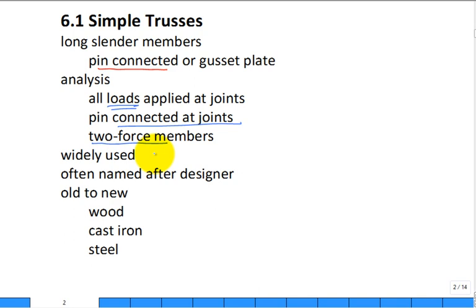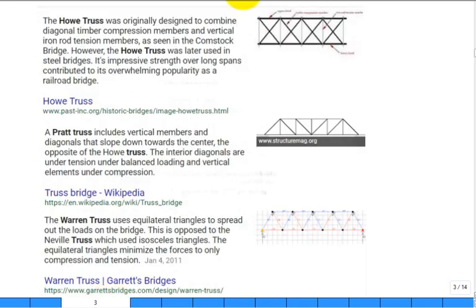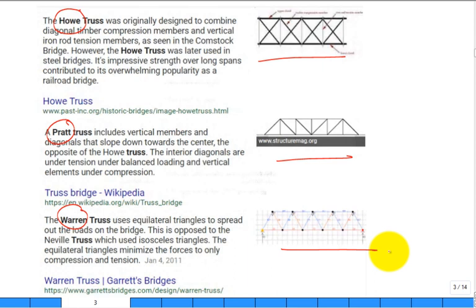In analysis, we look at the joints — that's the only place loads are placed. Everything is concentrated on those joints where the long slender members come together. They're pin-connected at the joints, and because they're pin-connected long slender members with everything at the joints and nothing in the middle, they're all two-force members — either in tension or compression along that line of action. Trusses are very widely used and often named after their original designer — for example, a Pratt truss or a Warren truss.